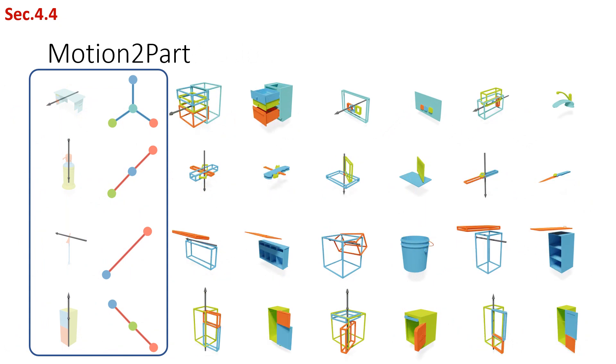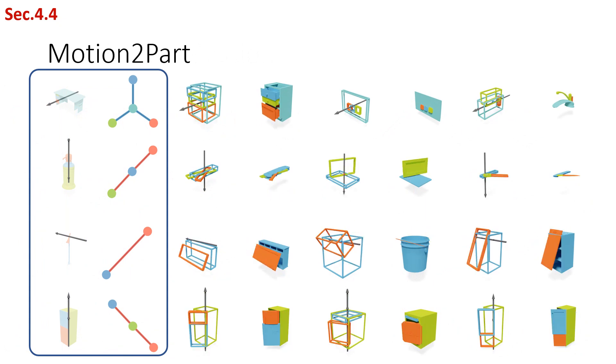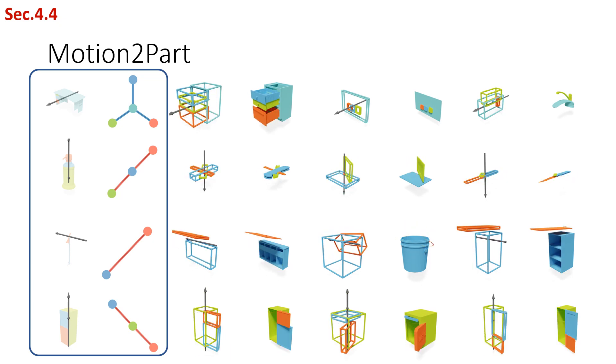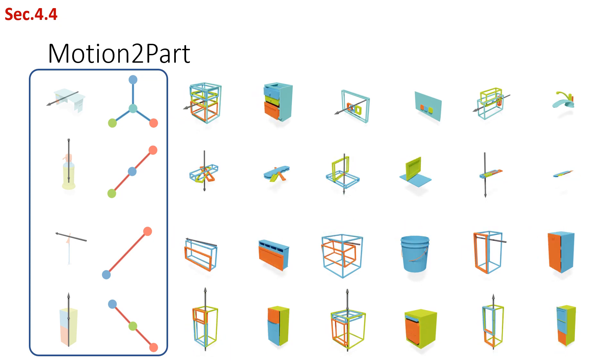We also demonstrate motion-to-part by using joint and graph topology as known conditions. Our model proposes parts to fit in the motion structure.